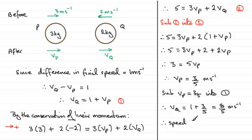What was the speed of P? The speed of P is equal to 3 fifths meters per second. And the speed of Q after the impact we found out was 8 fifths of a meter per second.